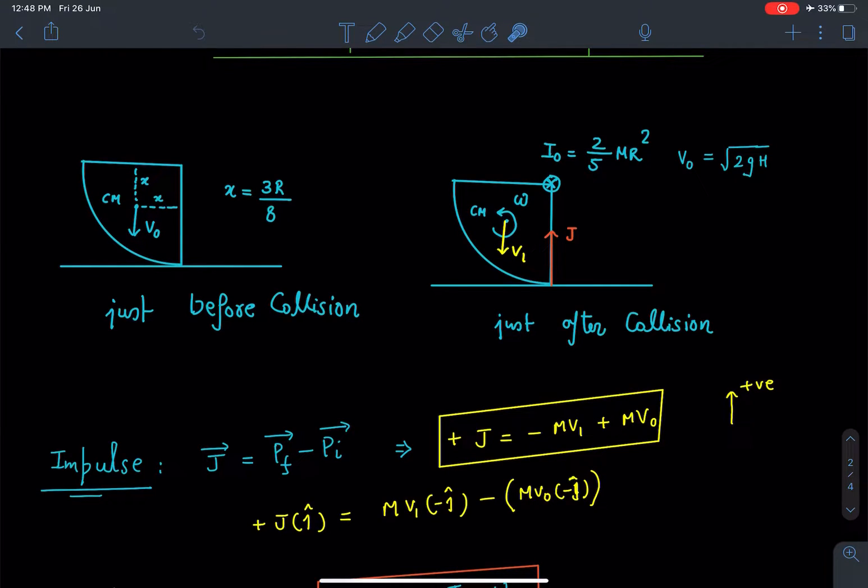Since this quarter of the sphere is part of the original sphere, about this axis which is passing through this center O into the plane, its moment of inertia is going to be same only which is 2/5 mR². At the time of collision velocity of center of mass is v₀ = √(2gh). We also need to see the location of this center of mass because in case of standard hemisphere that is on the symmetrical axis at a distance of 3R/8 from the center of the sphere.